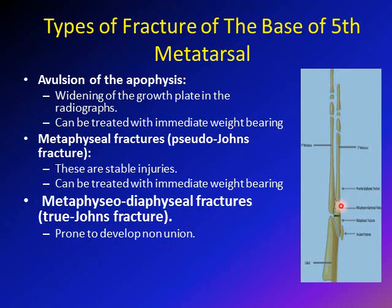You can define the fracture type by the location of the fracture line. If the fracture line comes at the junction between the fifth metatarsal and the cuboid bone, this is a metaphyseal fracture — stable, can be treated with weight-bearing immediately. If the fracture line comes between the fourth and fifth metatarsal, this is a metaphysio-diaphyseal fracture that can develop non-union, requiring non-weight-bearing cast or internal fixation. Fractures in the proximal diaphysis are usually stress fractures occurring in children walking on their fifth metatarsal in varus positions.